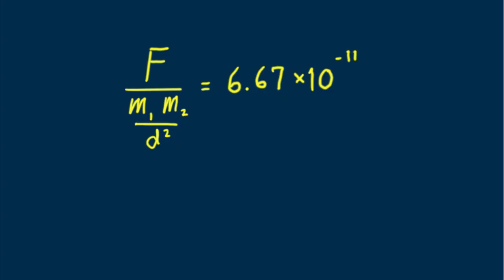In standard units of newtons, kilograms, and meters, 6.67 times 10 to the minus 11th, a very tiny number, indicating the tiny force of gravity between objects small enough to be in the lab.